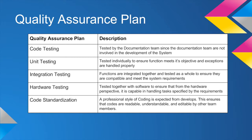For code testing, the documentation team tests the codes written by the development team, allowing us to see the code from a brand new perspective and determine if anything requires fixing. Unit testing is done by the development team to ensure that functions handle exceptions properly and meet the objectives. Integration testing checks whether functions can work together and produce the correct results. Hardware testing ensures that software and hardware do not conflict and are capable of working together for the project to function properly. Code standardization is for the professional outlook we seek to achieve in developing this project.